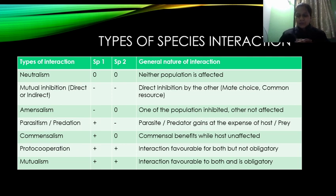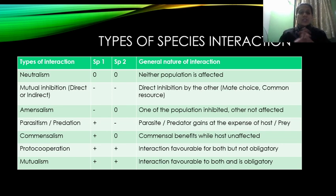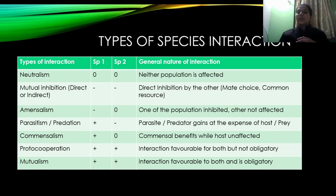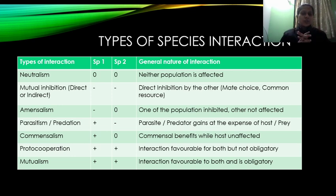फिर हम बात करते हैं parasitism या predation की। Predation या parasitism में एक species दूसरे species को खाएगी या उसको utilize करेगी। There is plus minus — the parasite or predator is on the winning side. It gains at the expense of the host or the prey। Parasite किसी host को conquer करता है, उस host से nutrition लेगा, रहने की जगह लेगा। Predator अपने prey को खा जाएगा — there is benefit of the predator, but the prey is at loss।